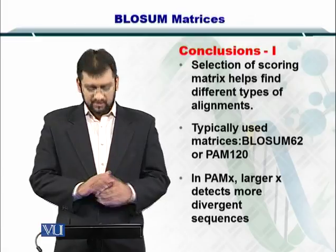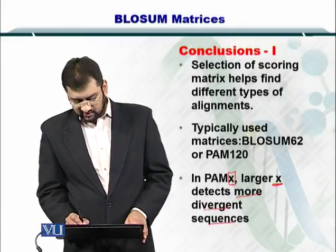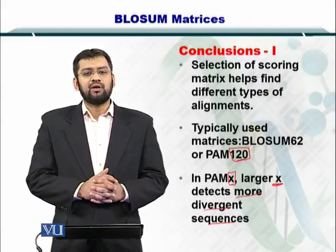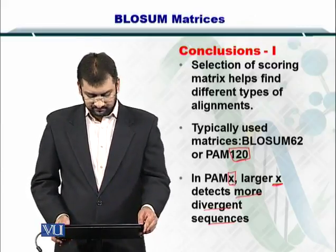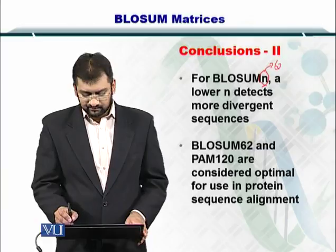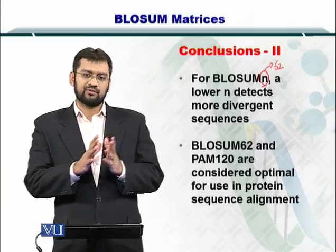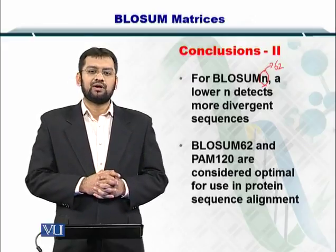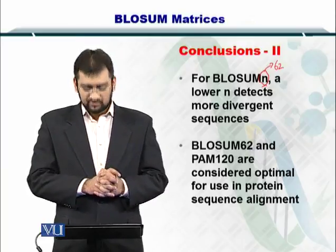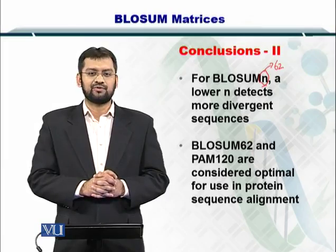Note that in PAM X, a larger X detects more divergent sequences, so PAM 120 can have very good resolution compared to PAM 100. However, for BLOSUM N — where N is 62 — a lower N detects more divergent sequences. So BLOSUM 50 will be able to consider much more diversity, but BLOSUM 72 or 80 will not cater for as much diversity. As mentioned, BLOSUM 62 and PAM 120 are typically used in sequence alignment scoring systems. Thank you.